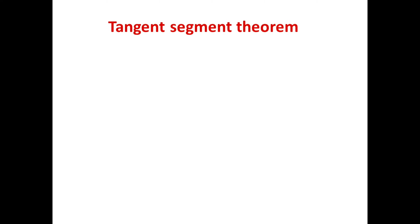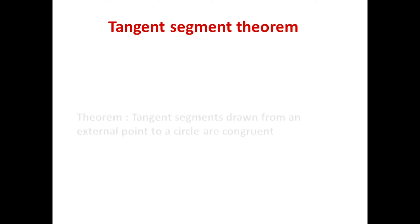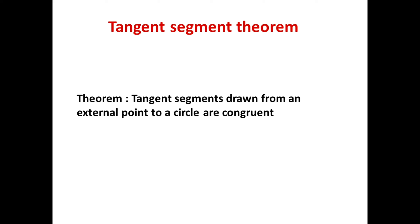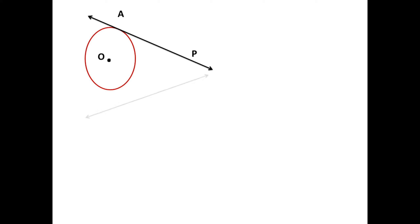Now let us look at another theorem — the tangent segment theorem. The statement of the theorem is: tangent segments drawn from an external point to a circle are congruent. We are going to prove this theorem. First we draw a diagram. Consider one circle with center O, and a tangent drawn from an external point P. PA is the first tangent, and PB is another tangent through point P. So line PA and line PB are two tangents drawn to the circle from external point P. We draw segments OP, OA, and OB as construction.